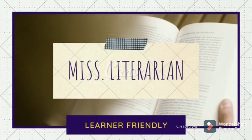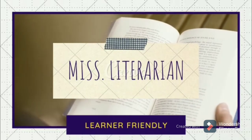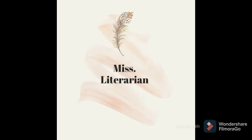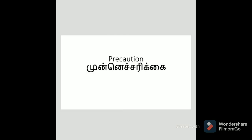Let us now learn some important vocabulary that can be used in everyday conversation. Precaution: a measure that is taken to prevent something dangerous from happening. Let us now use precaution in a sentence. While driving, she always wears her seat belt as a precaution.